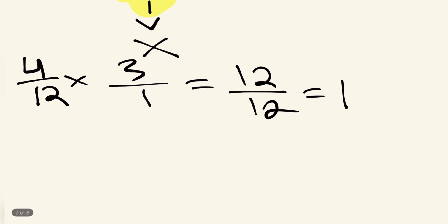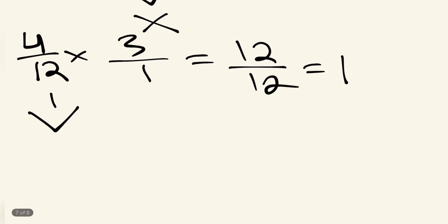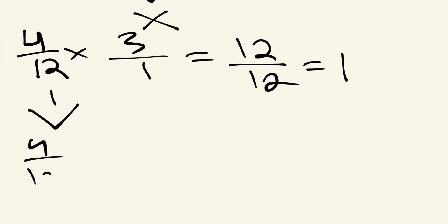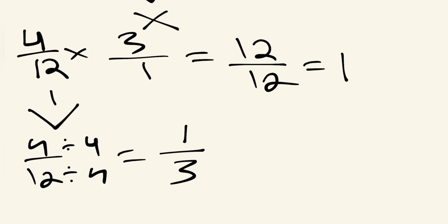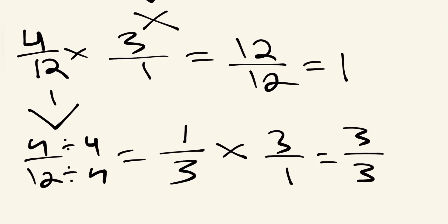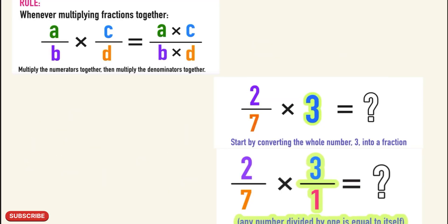Note that four over twelve is also factorable. Dividing both by four: four divided by four is one, and twelve divided by four is three, giving us one third. So alternatively, one third times three over one gives us three over three, which also equals one — confirming our answer.